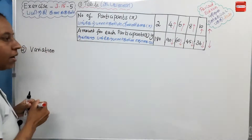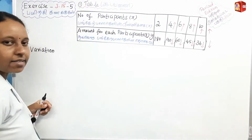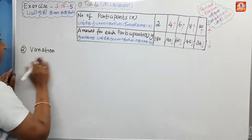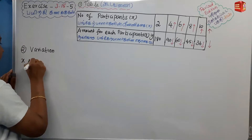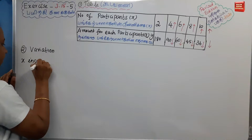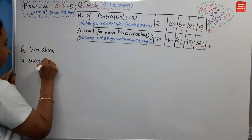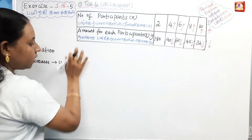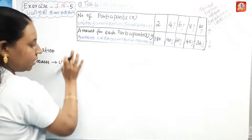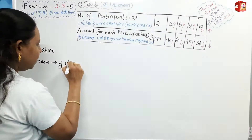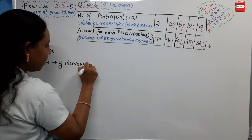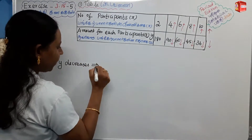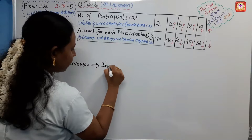Now, what do we observe? As x increases, y decreases. This type of relationship is called indirect variation.